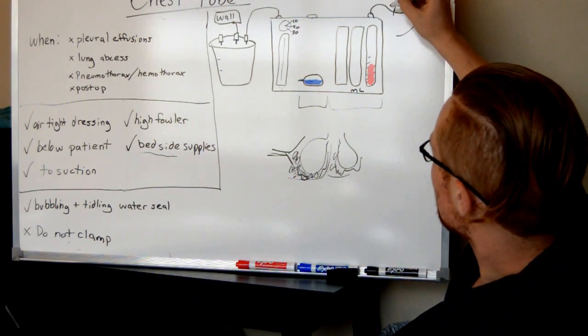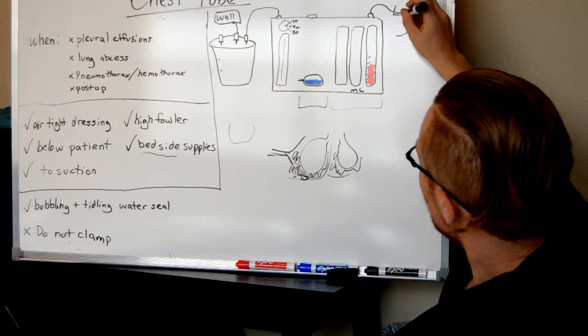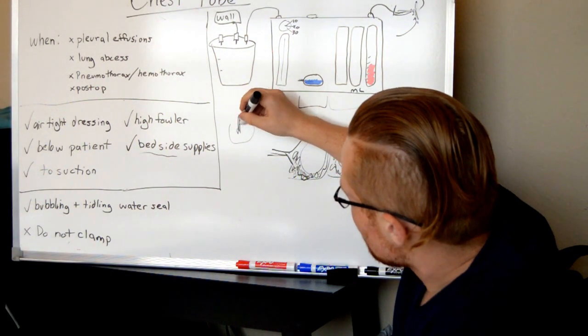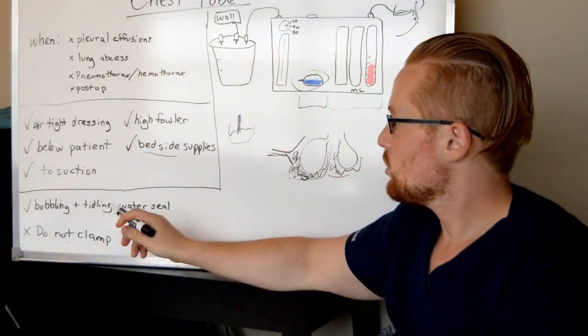If it were to separate here in the tube, you want to have a thing of sterile water, and you'll want to connect the tube that's attached to the patient into the sterile water, so that it will make an artificial water seal.